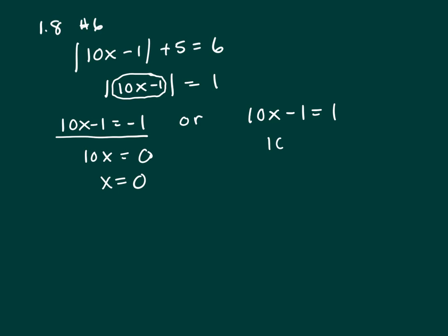And on the right-hand side, it's going to give you 10x equals 2 because we added 1 to both sides. And that is x equals 2 tenths, which is the same thing as 1 fifth. So your two answers are 0 and 1 fifth.